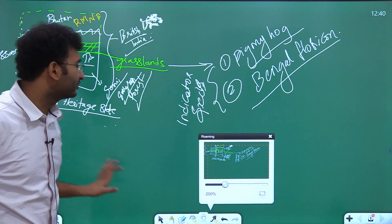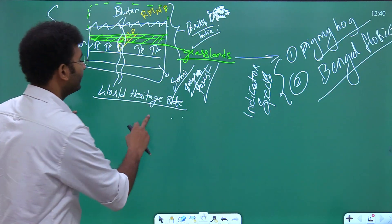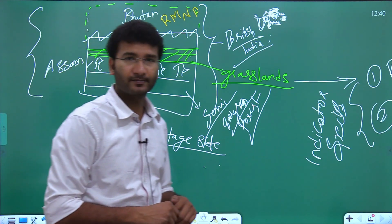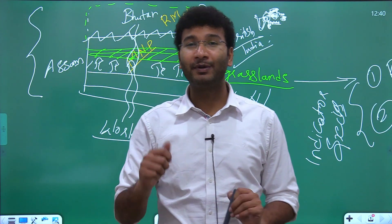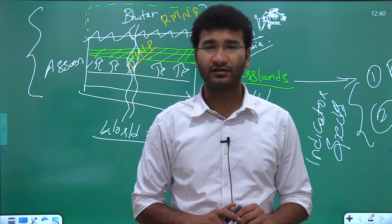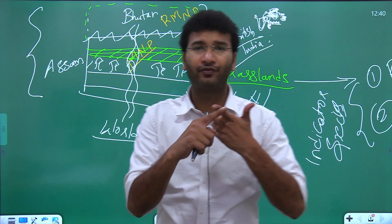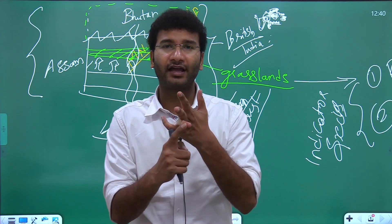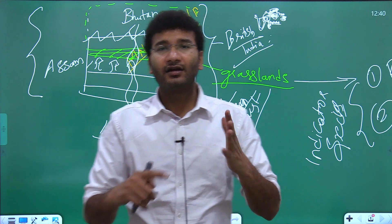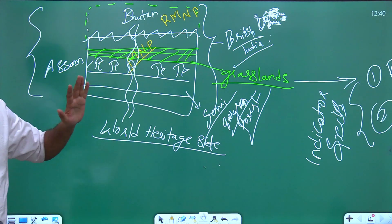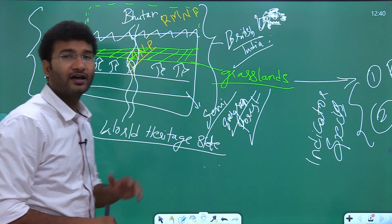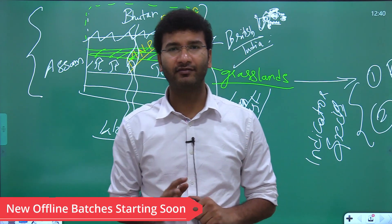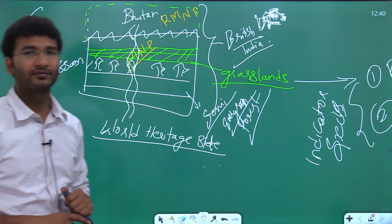Manas also hosts tigers, rhinoceros, elephants, leopards, and clouded leopards — the so-called big five animals. The Manas-Bhutan international boundary is significant. Other national parks with international boundaries include Barnadi Wildlife Sanctuary. The seven national parks in Assam are: Manas, Raimona (notified in 2022), Dihang Patkai (notified in 2022), Orang, Nameri, Kaziranga, and Dibru Saikhowa.